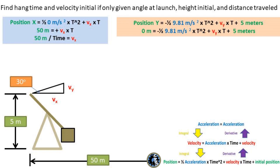For the x portion, let's rearrange it so v sub x, or velocity sub x, is on one side. This leaves us with v sub x equal to 50 meters over time.